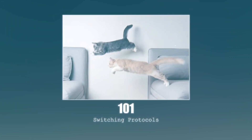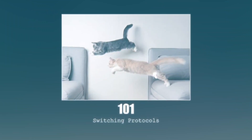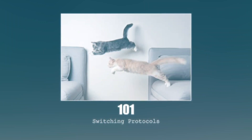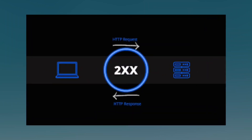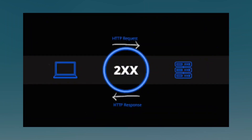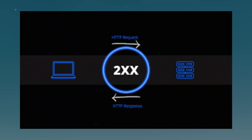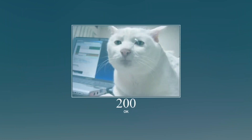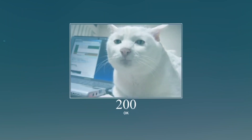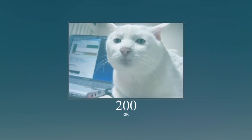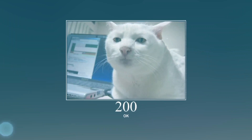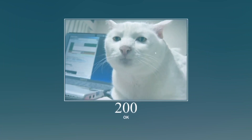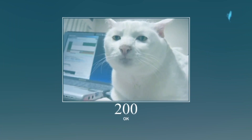Now, we all love the 2xx codes. These are the happy path responses, meaning everything worked as it should. 200 OK — this is the one you want to see. The request was successful, and the server is sending the content back. Think of it as a thumbs up.